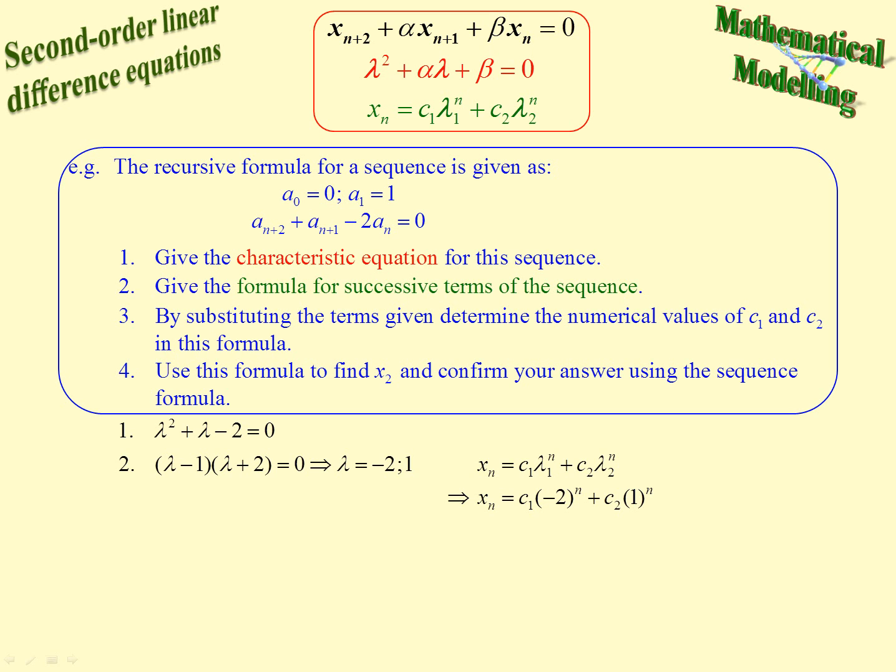Now we need to find the values of C1 and C2, number 3. So we're going to substitute 0, 0, 1, 1 into this equation. That gives us two equations when simplified in C1 and C2, and we can solve those simultaneously. Pretty straightforward, Grade 9 stuff. So we won't do it now, we'll just give the answers.